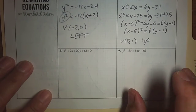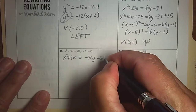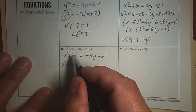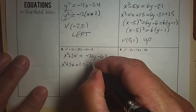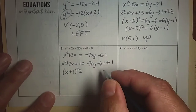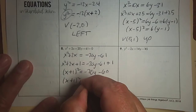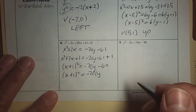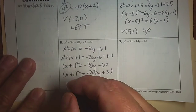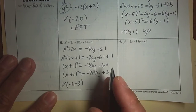Number 8: x is squared. Separate variables — x² + 2x on the left, 20y and −61 on the right. Complete the square: 2 divided by 2 is 1, squared is 1. Add 1 to both sides. Factor the left as (x + 1)². On the right, −61 + 1 = −60. Factor out −20, noting that factoring out a negative changes the plus sign: −20(y + 3). The equation becomes (x + 1)² = −20(y + 3). The vertex is at (−1, −3), and since x is squared with a negative coefficient, it opens down.